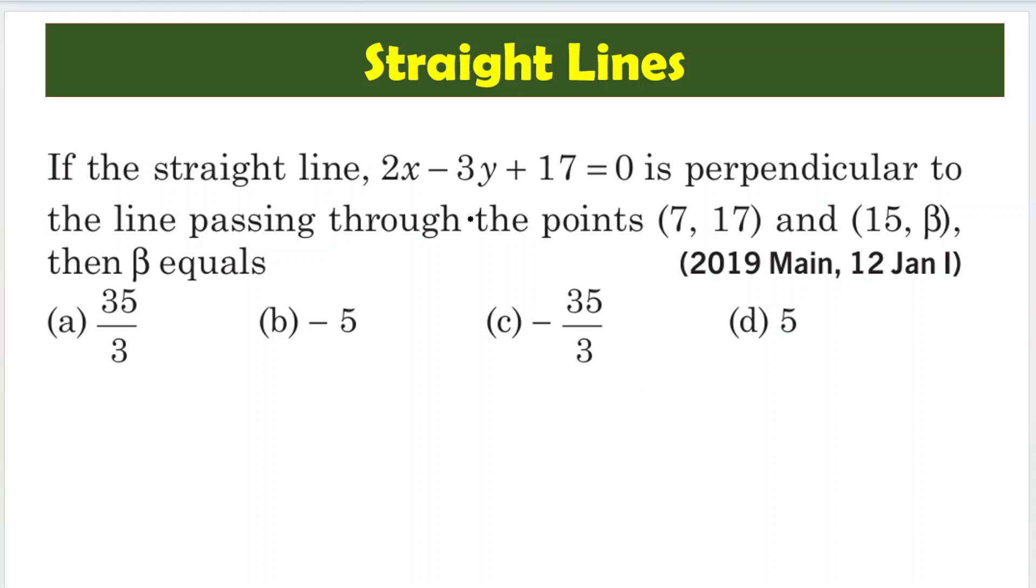We are given this line 2x minus 3y plus 17 equals 0, and this line is actually perpendicular to the line going through these two points: 7 comma 17 and 15 comma beta. Then what is beta?